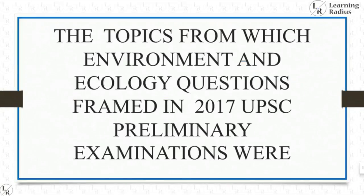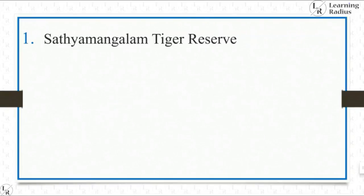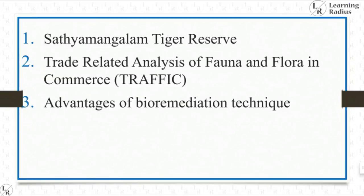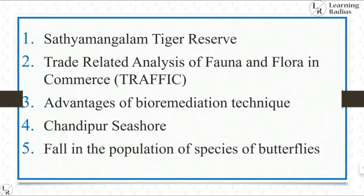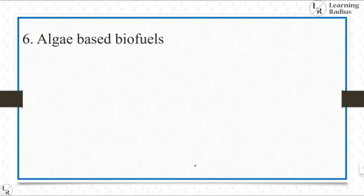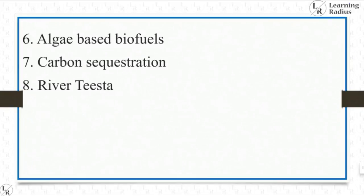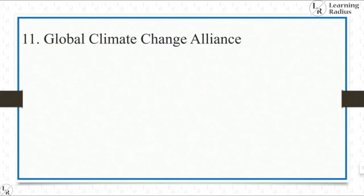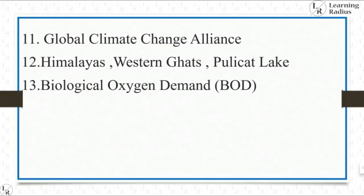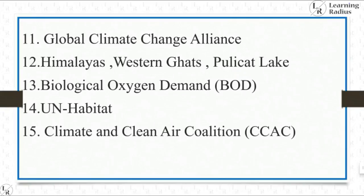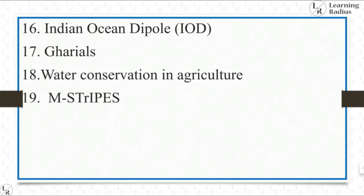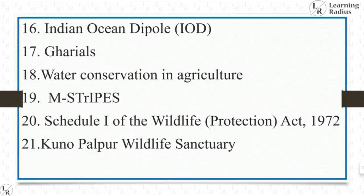The topics from which environment and ecology questions were framed in the 2017 UPSC preliminary examinations were: Satyamangalam Tiger Reserve; TRAFFIC — Trade Related Analysis of Fauna and Flora in Commerce; advantages of bioremediation technique; Chandipur sea shore; fall in the population of species of butterflies; algae-based biofuel; carbon sequestration; River Teesta; Zika virus; Wildlife Protection Act 1972 animals that cannot be hunted; Global Climate Change Alliance; Himalayas, Western Ghats, Pulicat Lake; Biological Oxygen Demand; UN Habitat; Climate and Clean Air Coalition; Indian Ocean Dipole; Gharials; water conservation in agriculture; M-Strips; Schedule 1 of the Wildlife Protection Act 1972; Kuno Palpur Wildlife Sanctuary.